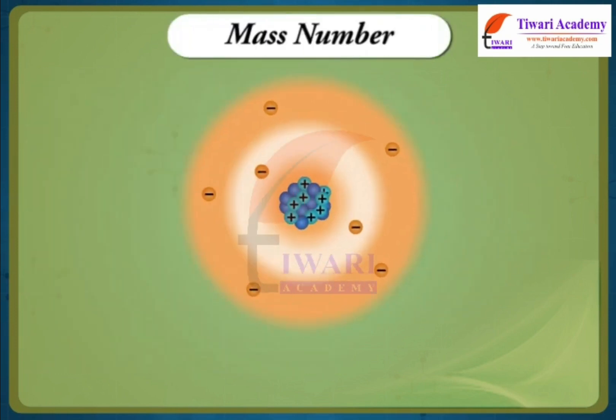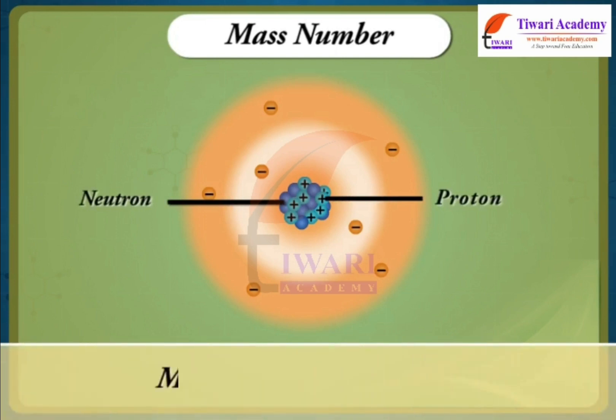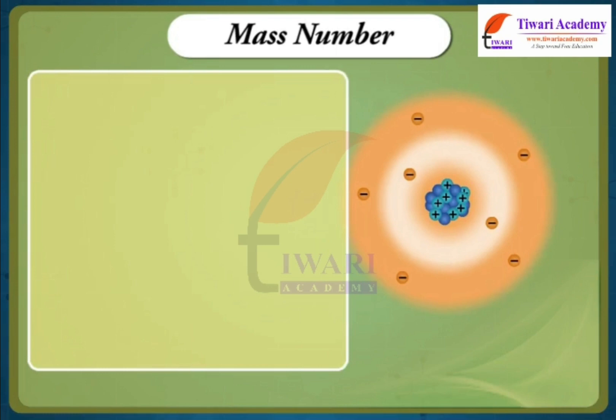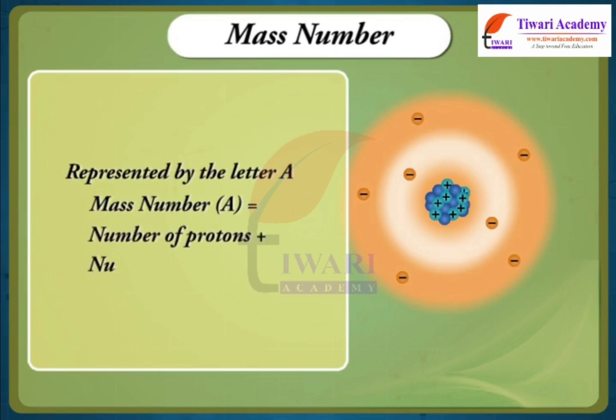Mass number. Total number of protons and neutrons in the nucleus is called mass number of the atom. It is generally represented by the letter A. Mass number A is equal to number of protons plus number of neutrons is equal to number of nucleons.